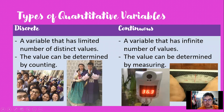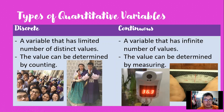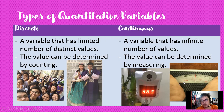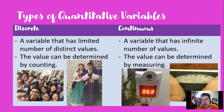When we say continuous, it is a variable that has an infinite number of values. We can describe this variable by decimal, fraction, or whole number. The value can be determined by measuring. For example, temperature has a decimal point. For weight, it doesn't hit the 140 mark exactly — I can assume it is 139.9 pounds. So we can describe it by decimal, fraction, or whole number — meaning it is infinite.